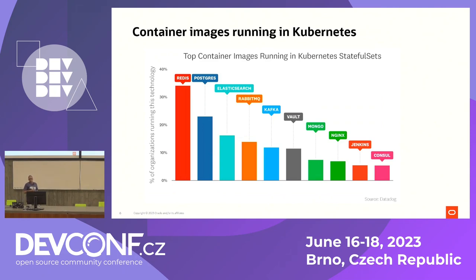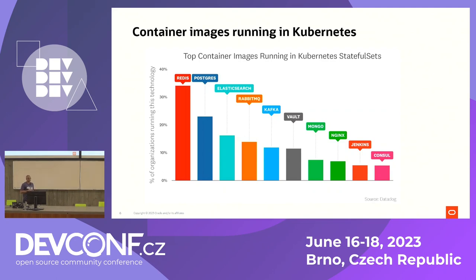In terms of container images — just a snapshot, not exhaustive — you can see the components around storage persistence and similar concerns. There are several players here apart from Oracle, so if you're running a microservices project involving container orchestration and Kubernetes and Cloud Native, at some point you will have to interact with and include a database as part of your Kubernetes cluster. That's a common concern.